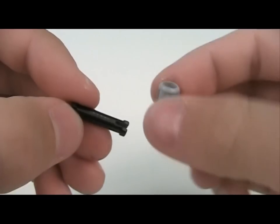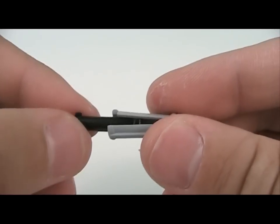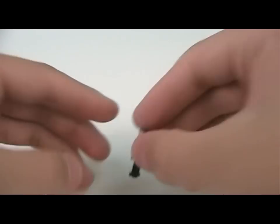To assemble the connectors, simply align the posts on the inner core with the grooves on the outer body and press them firmly.